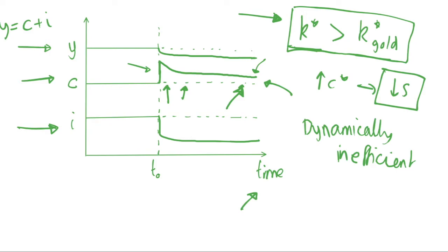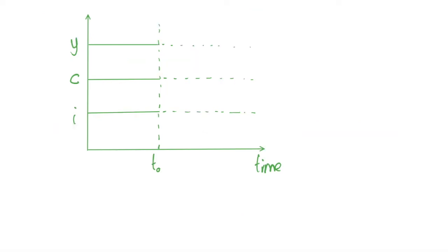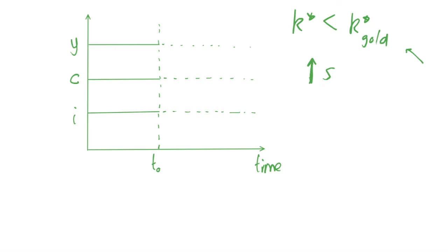Now let's consider the other case: we want to transition to the golden rule steady state but we're transitioning from a k* which is less than the golden rule steady state. So we have lower capital per capita in our steady state than we want in the golden rule. How do we increase our capital per capita to get to the golden rule? We increase the savings rate, which increases investment and thus capital per capita.